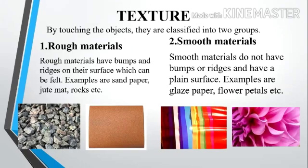Now, the second one — smooth materials. Smooth materials do not have bumps or ridges and have a plain surface. Examples are glazed paper, flower petals, etc.